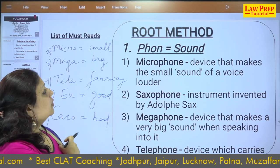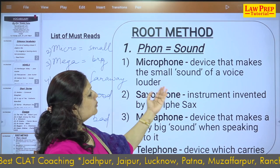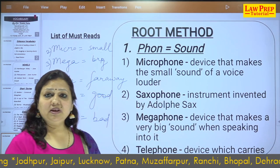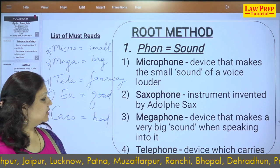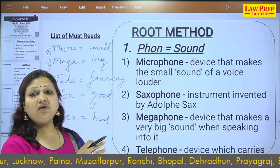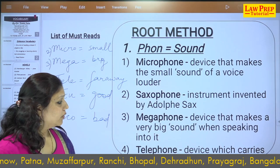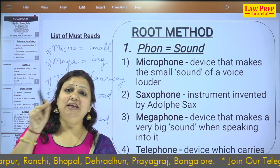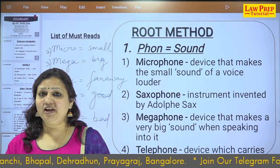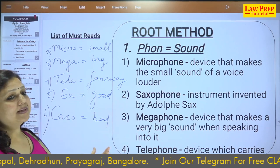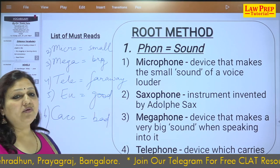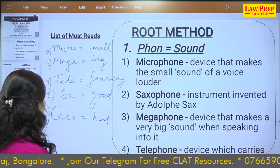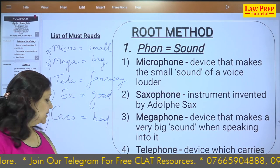The microphone is a device that makes the small sound of a voice loud. The saxophone is an instrument invented by Adolphe Sax to amplify sound. The megaphone is a device that makes sound big when you speak into it. The telephone carries sound over long distances — we used to have STD calls and dial numbers. Euphonous means good sound, pleasant to the ear; cacophonous means bad, shrill sound — like a trumpet or crow. I hope you have jotted down all six roots.